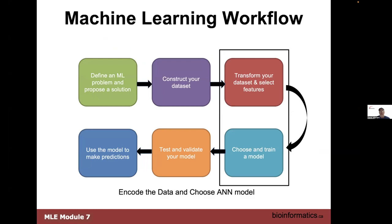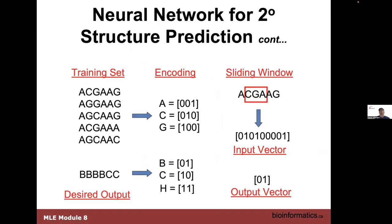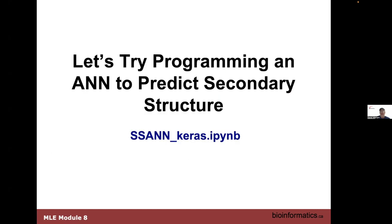As a reminder, if we pretend our sequence is just made up of three letters — alanine, cysteine, glycine — we talked about one-hot encoding. We talked about how we'd have an output: in this case beta strand, coil, and helix, so three instead of coding and non-coding. We have a sliding window moving along three residues at a time, so three residues produce a vector of nine and an output vector of two bits.